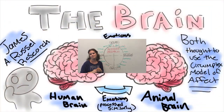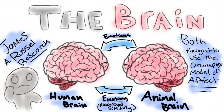Now that Rachel has finished talking about the examples, we're going to talk about the source. The primary source that has researched and discovered information about the circumplex is entitled The Circumplex Model of Affect: An Integrative Approach to Affective Neuroscience, Cognitive Development, and Psychopathology, by Jonathan Posner, James A. Russell, and Bradley S. Peterson.